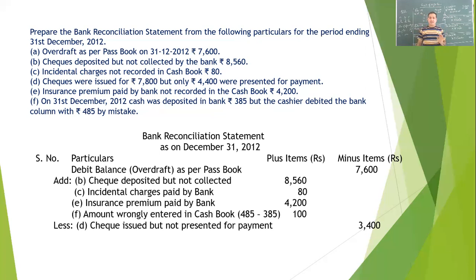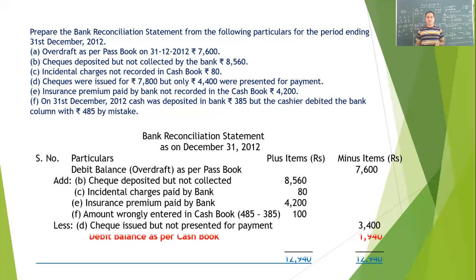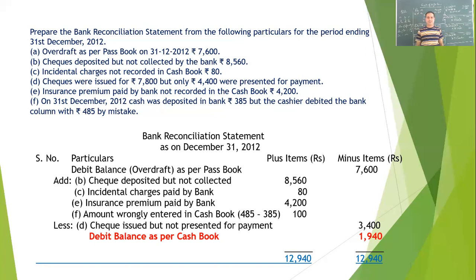At the end, we make the total of both sides. The plus side is higher than the minus side, so the difference of rupees 1940 will go to the minus side as the debit balance as per cashbook. The total of both sides comes to rupees 12,940. Thank you.